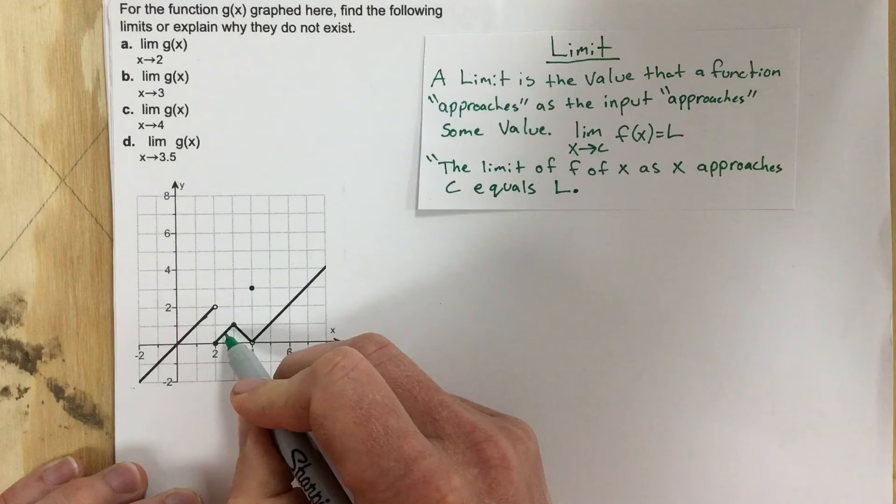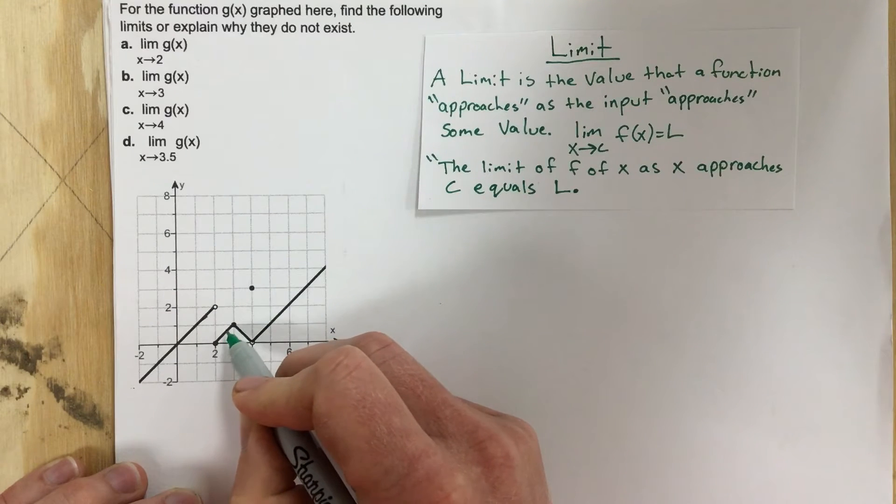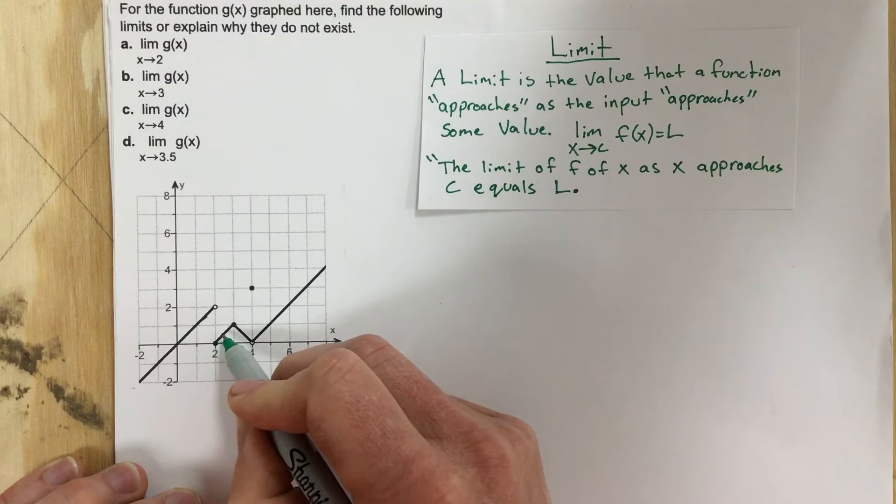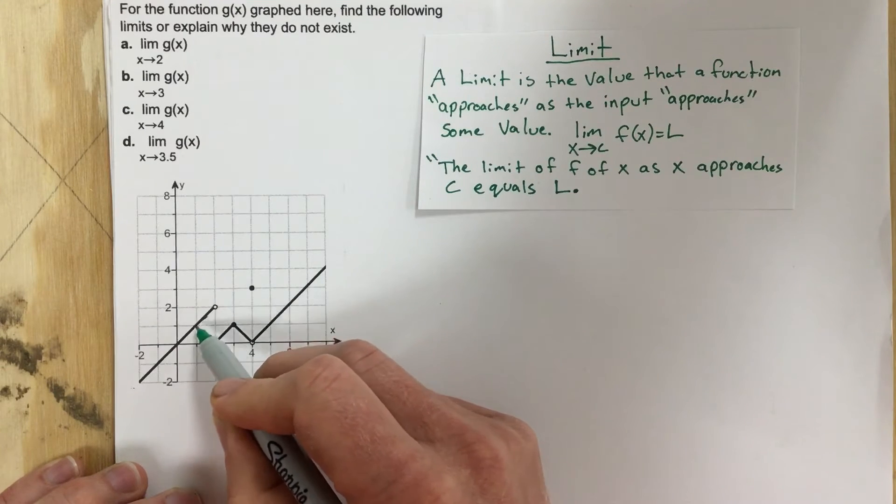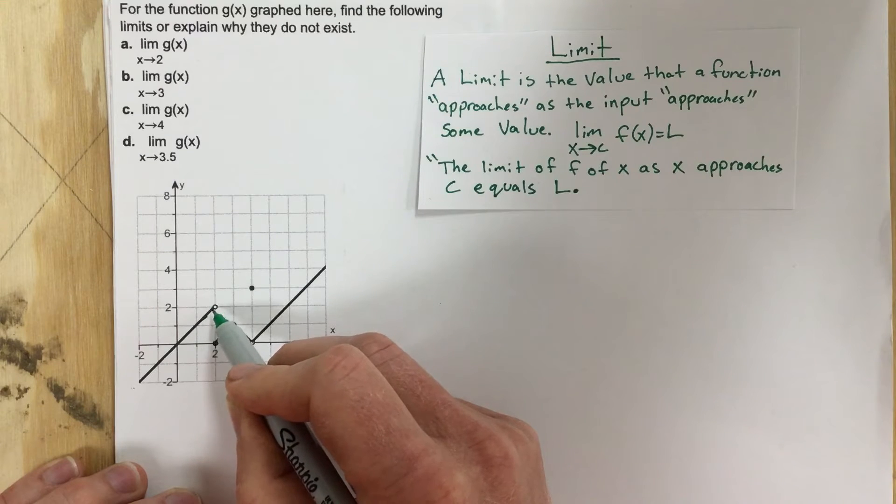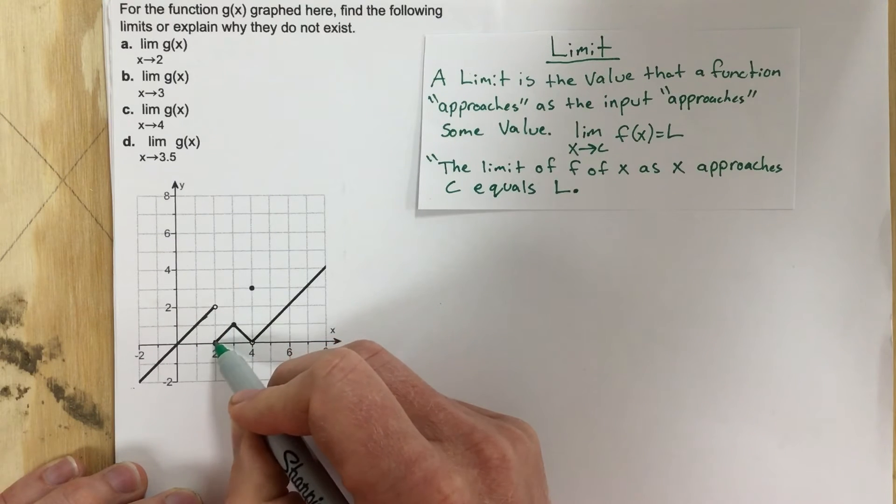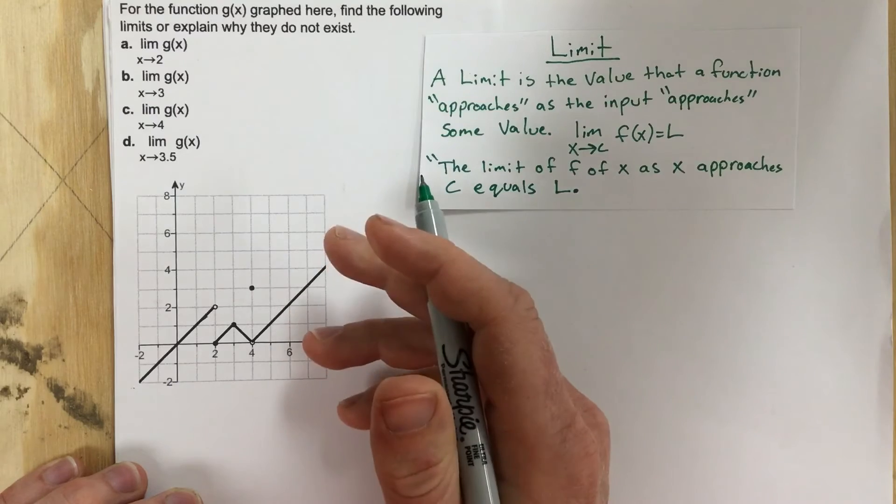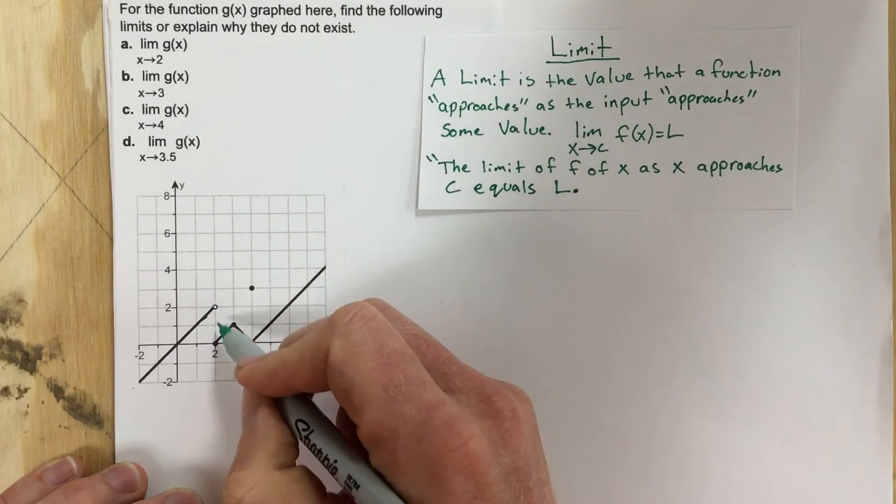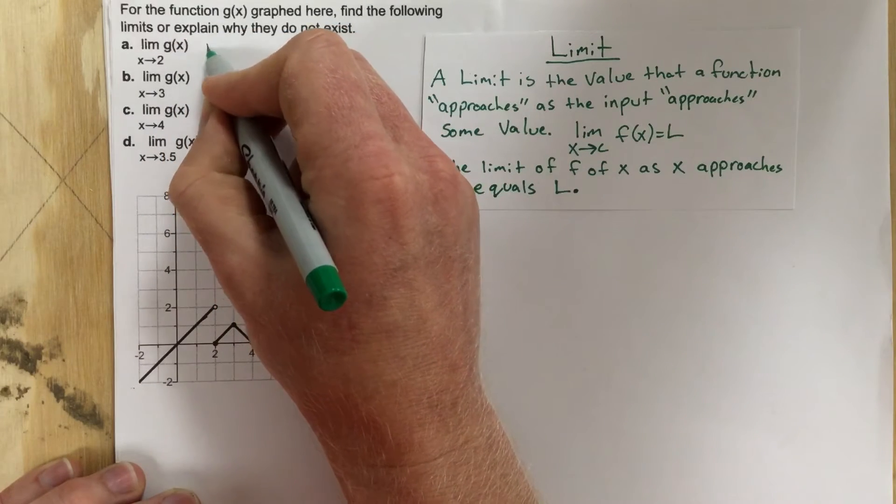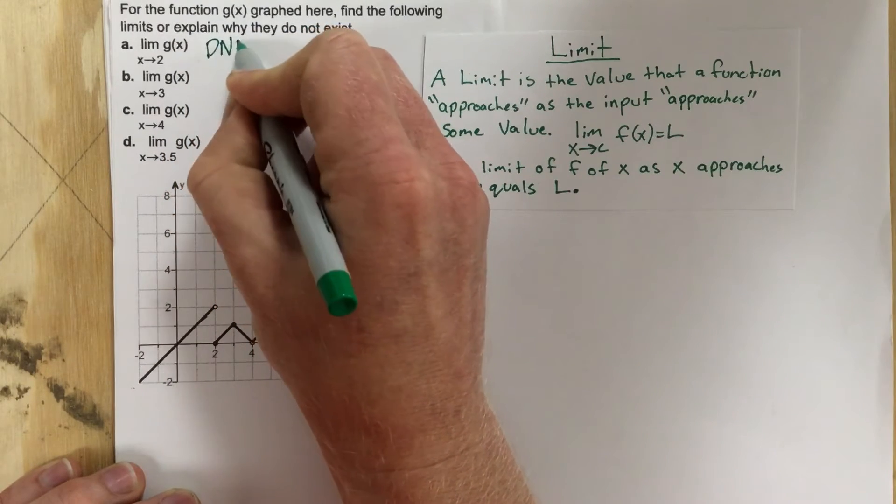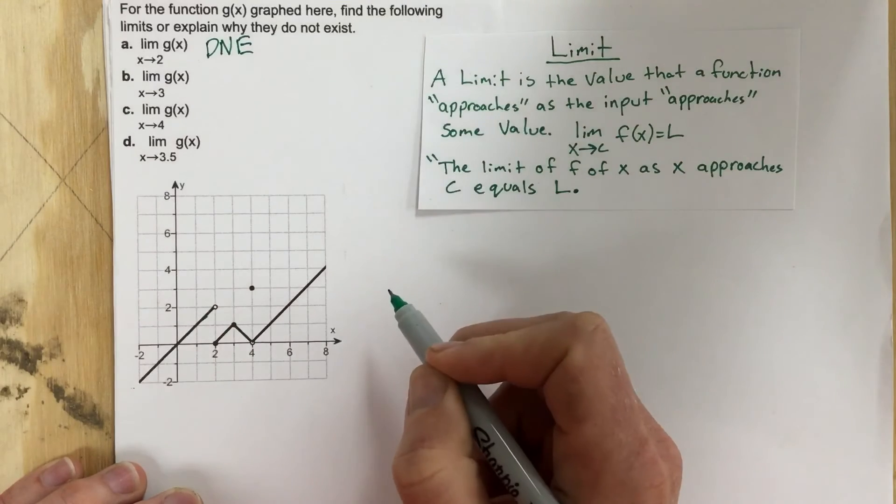But if I approach from the right, the value of the function approaches a y value of 0 because it's approaching the x-axis. So because this approaches a y value of 2 and this approaches the y value of 0, we can say that the limit doesn't exist because this function is not converging on the same point. So in this case we'll say DNE. This does not exist for part A.